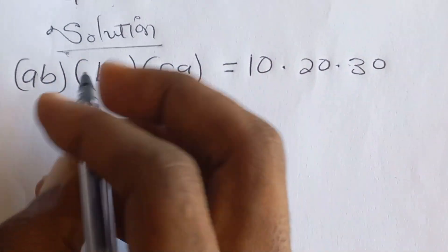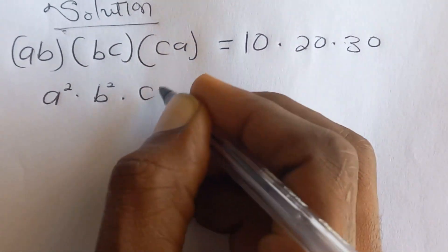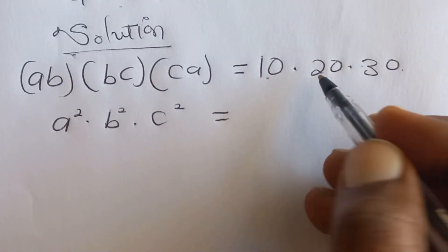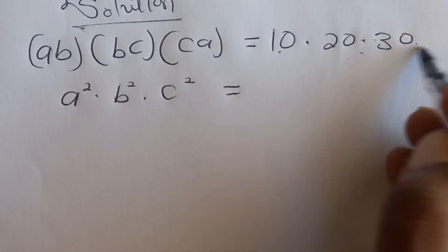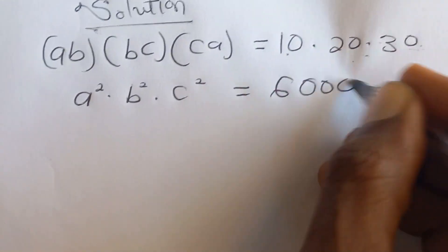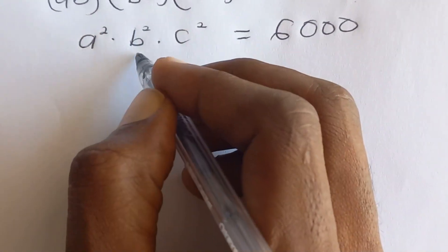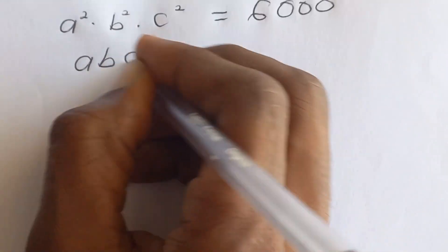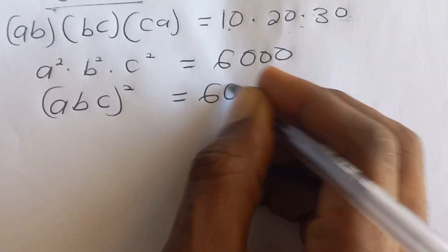Simplifying, we get a² multiplied by b² multiplied by c², which equals 10 times 20 equals 200, and 200 times 30 equals 6000. In algebra, a²b²c² can be rewritten as (abc)², which is equal to 6000.